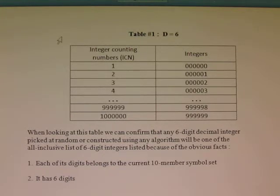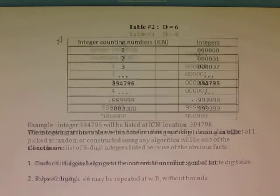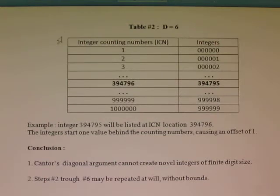Note, when we are saying using any algorithm, of course that includes Cantor's diagonal construction of another integer from digits of existing integers. Table 2 here shows a simple example of taking an integer 394795 and showing at what ICN or integer counting number location it is located. You can see that the integers start one value behind the counting numbers, causing an offset of one.